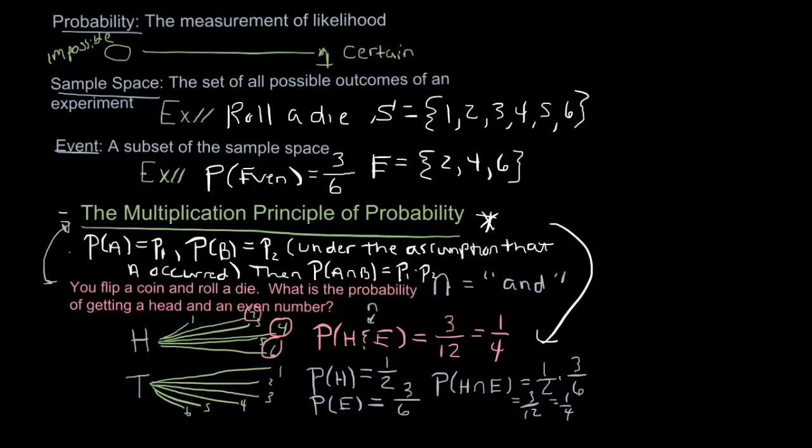Now there's a little nuance we'll talk about later on, that explains why I wrote this under the assumption that A occurred. Sometimes that assumption is not even necessary. For instance, in this case, regardless of what happened on the head, right, when you flip a coin and get a head or a tail, that has no effect on what happens when you roll the die. These are two different objects, they're not going to affect each other. There are certain cases where they do affect each other, and that's why I had to write under the assumption that A occurred, because the multiplication principle still works in those situations. So in any event, keep this principle in mind, we'll be using it, and I'll be referring to it later on. But this is just an introductory video on probability.